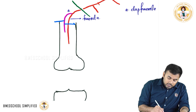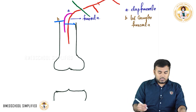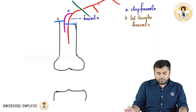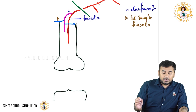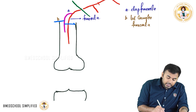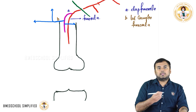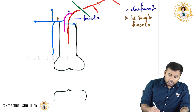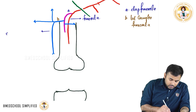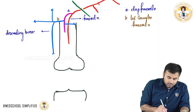B stands for lateral circumflex femoral artery. This lateral circumflex femoral artery divides into three branches: one branch going to the top called the ascending branch, one going transversely called the transverse or horizontal branch, and one coming down called the descending branch. This descending branch of the lateral circumflex femoral artery is an important vessel to note.